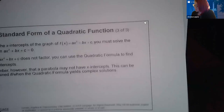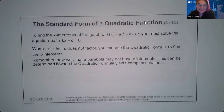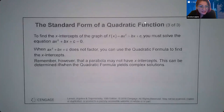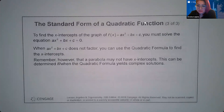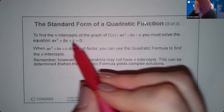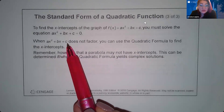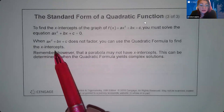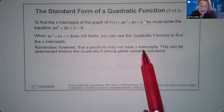To find the x-intercepts of f(x) = ax² + bx + c, you set the equation equal to zero and solve. If it doesn't factor, use the quadratic formula to find the x-intercepts. Remember: if the quadratic formula yields complex solutions, then the parabola has no x-intercepts.